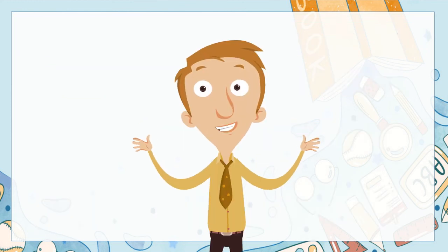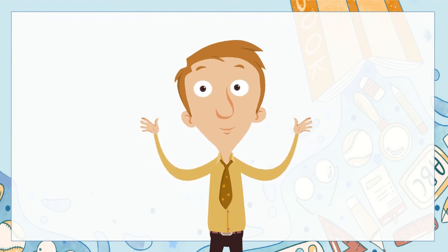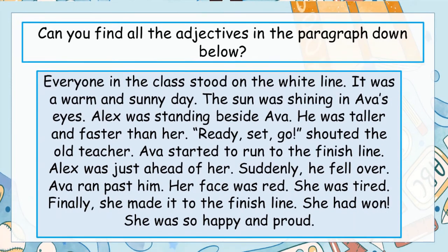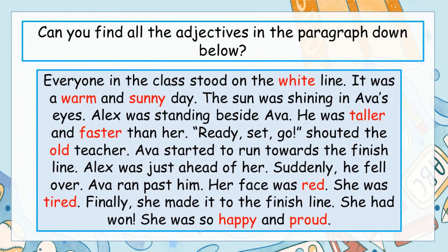Now let's see if we can find adjectives in paragraphs. Take a look at this little paragraph of text about a school race. Pause the video and see if you can find all the adjectives — there is more than one, and in some sentences there might be none. Remember, an adjective describes a noun and gives us more detail about it. Here are all the adjectives in that paragraph — pause and check to see if you got them all.